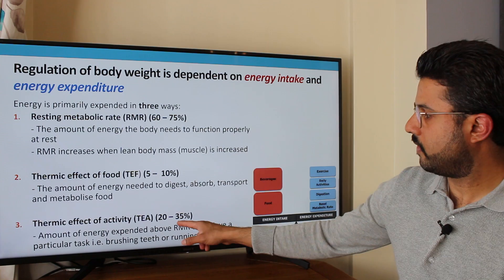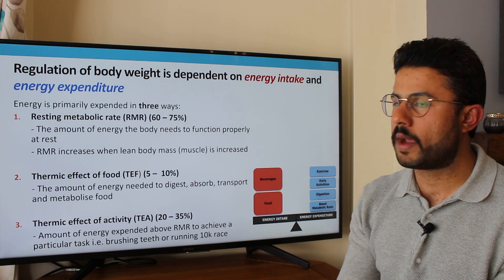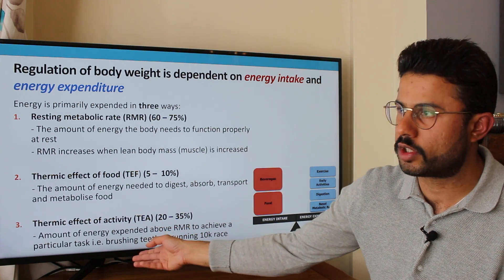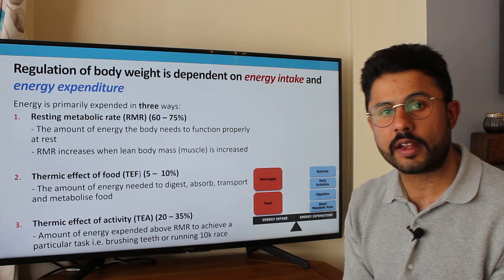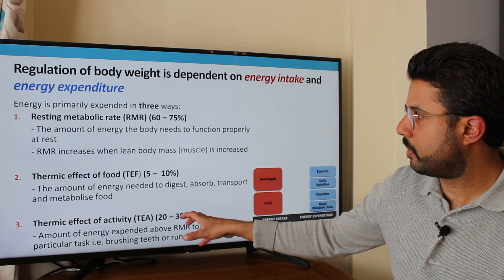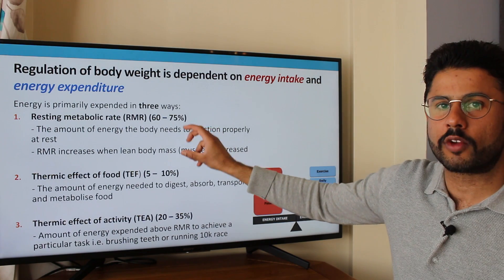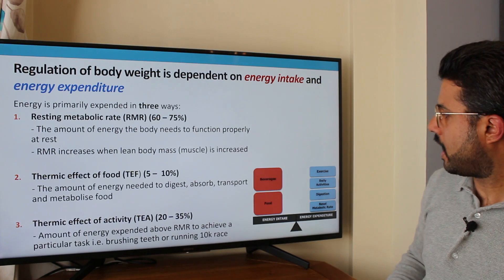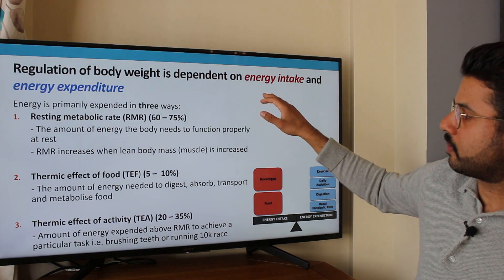The third main factor contributing to our energy expenditure is the thermic effect of activity. This we can vary, because it represents the amount of energy expended doing a particular activity — from something as simple as brushing your teeth or watching TV, to running a 10K race or more. We can manipulate the thermic effect of activity, and to an extent the resting metabolic rate as well, by changing the amount of lean body mass we have.